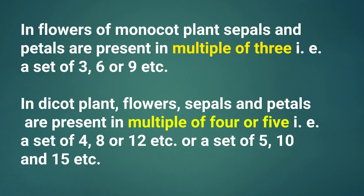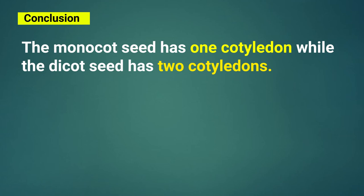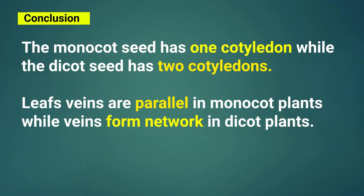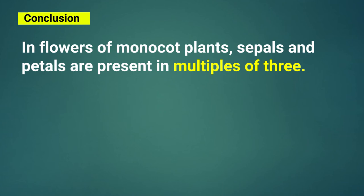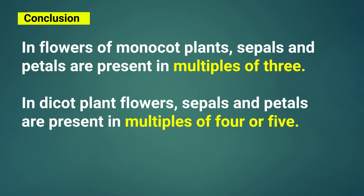Let's sum up our conclusion today. The monocot seed has one cotyledon while the dicot seed has two cotyledons. Leaf veins are parallel in monocot plants while veins form a network in dicot plants. In flowers of monocot plants, sepals and petals are present in multiples of three. In dicot plant flowers, sepals and petals are present in multiples of four or five.